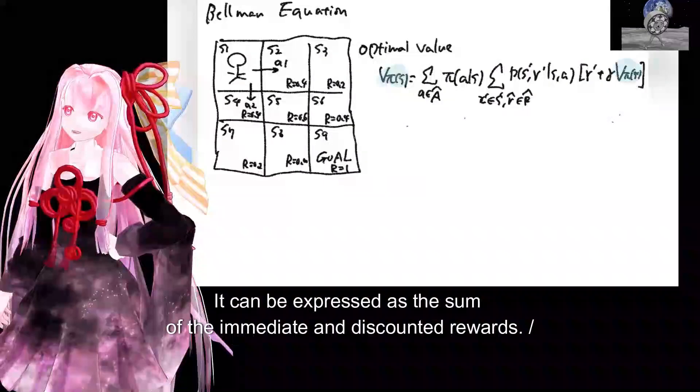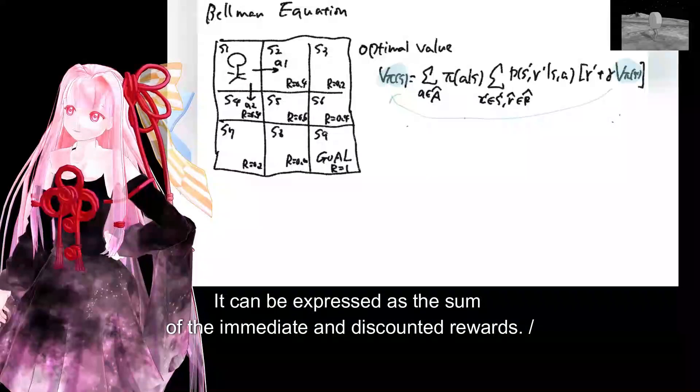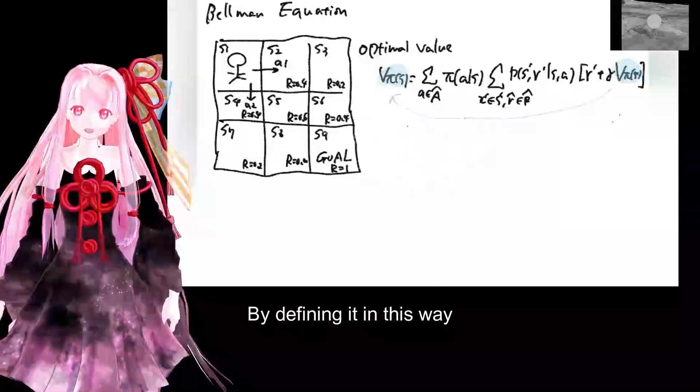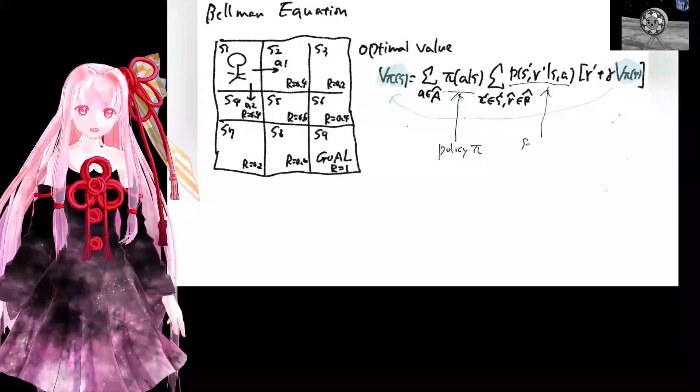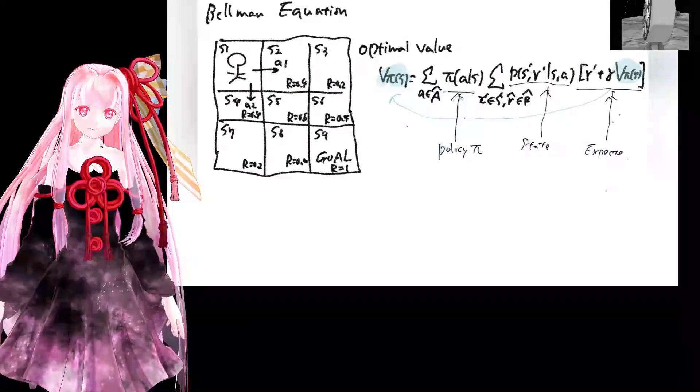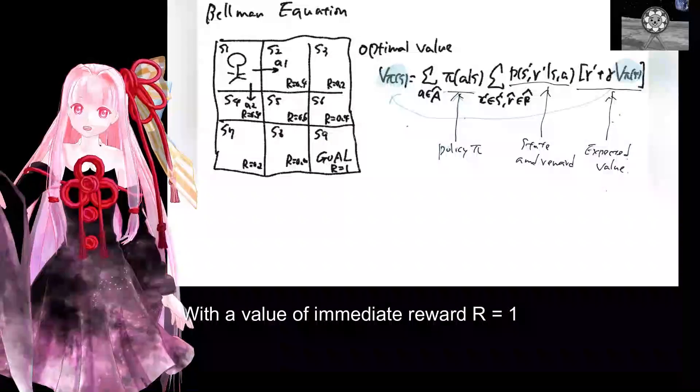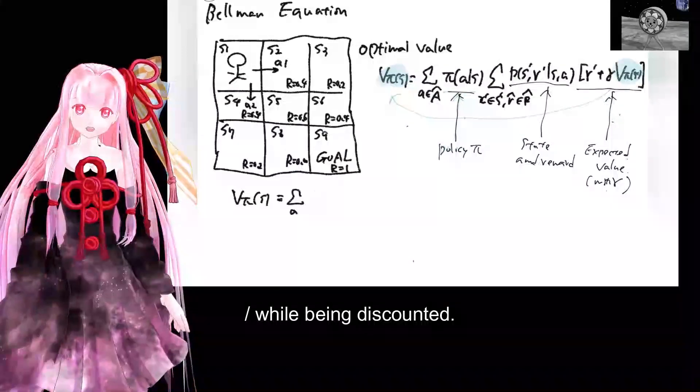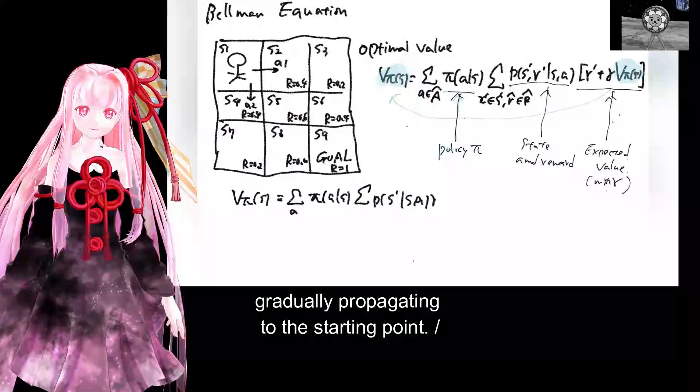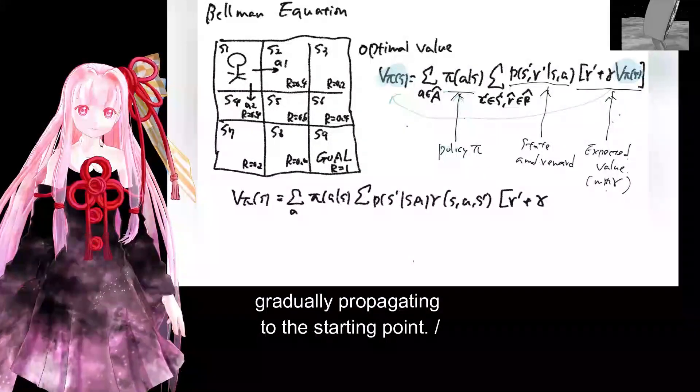It can be expressed as the sum of the immediate and discounted rewards. By defining it in this way, through repeated trial and error, with the value of immediate reward of 1 which can be obtained at the goal while being discounted, gradually propagating to the starting point.